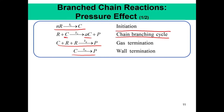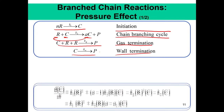Chain branching means one C gives rise to more than one C — typically 2. But this competes with the termination reaction. Once C is produced, it is not guaranteed that C will attack R to form subsequent reactions; C might be rendered inactive by gas termination or wall termination. We need to find the conditions under which branching reactions can compete with termination reactions to lead to effective chain branching.